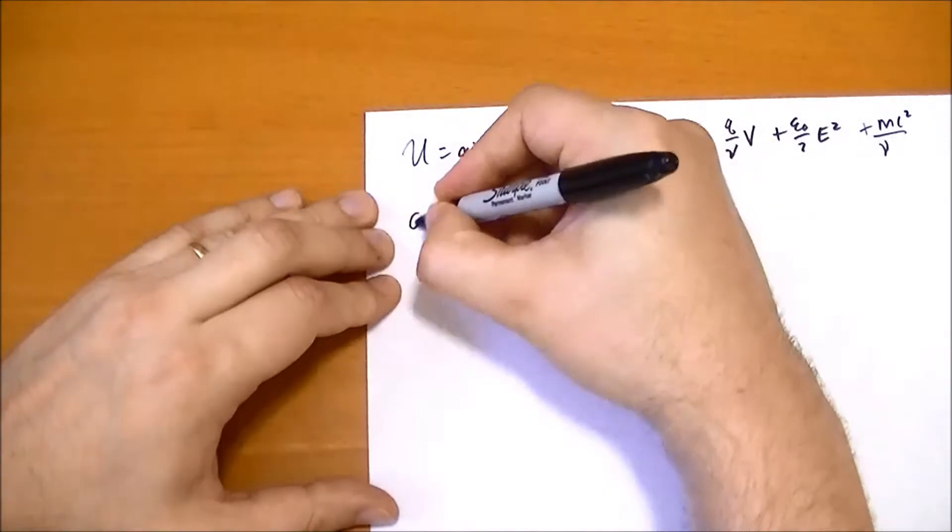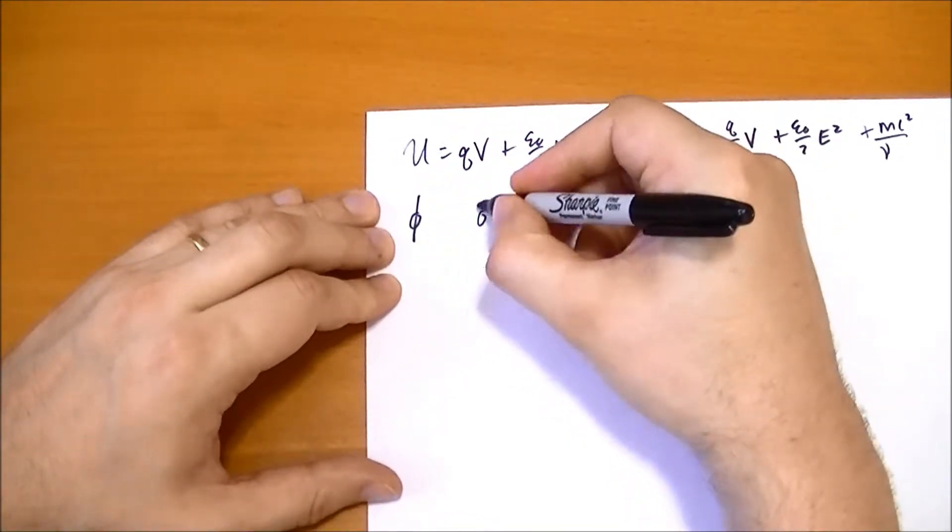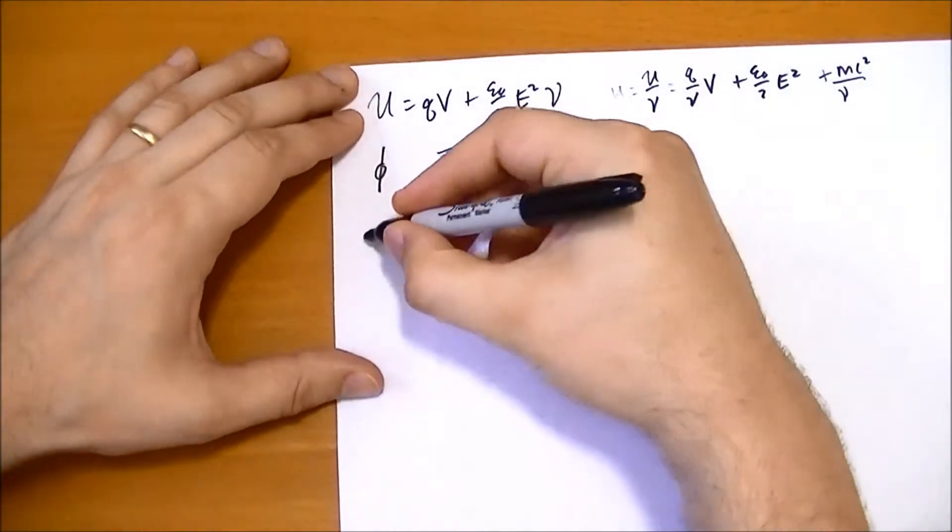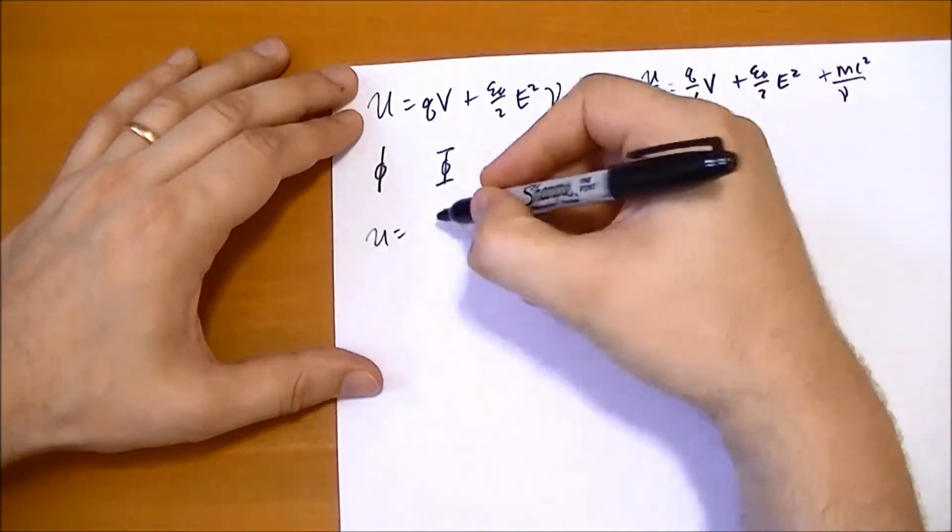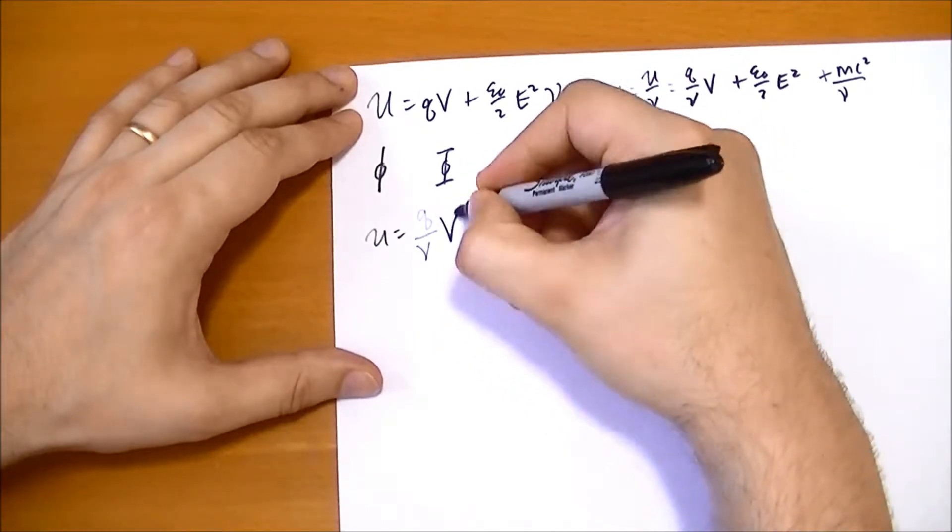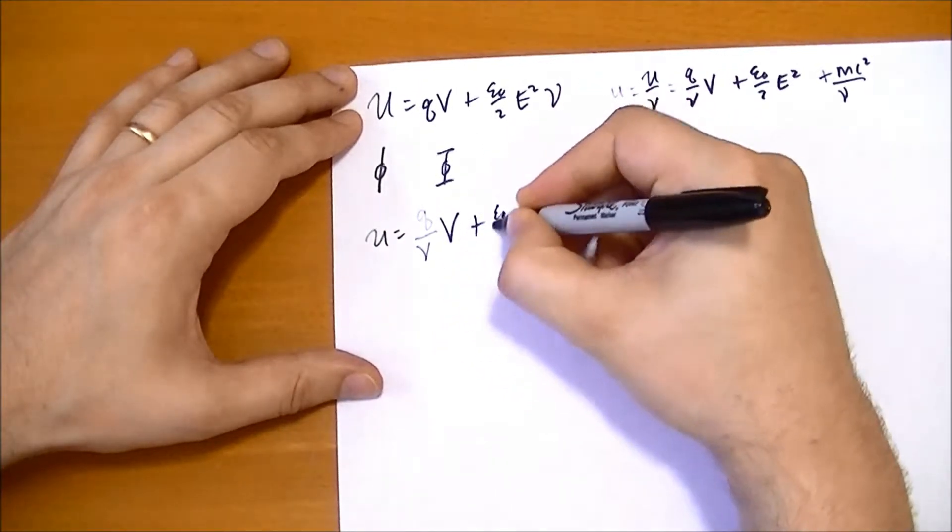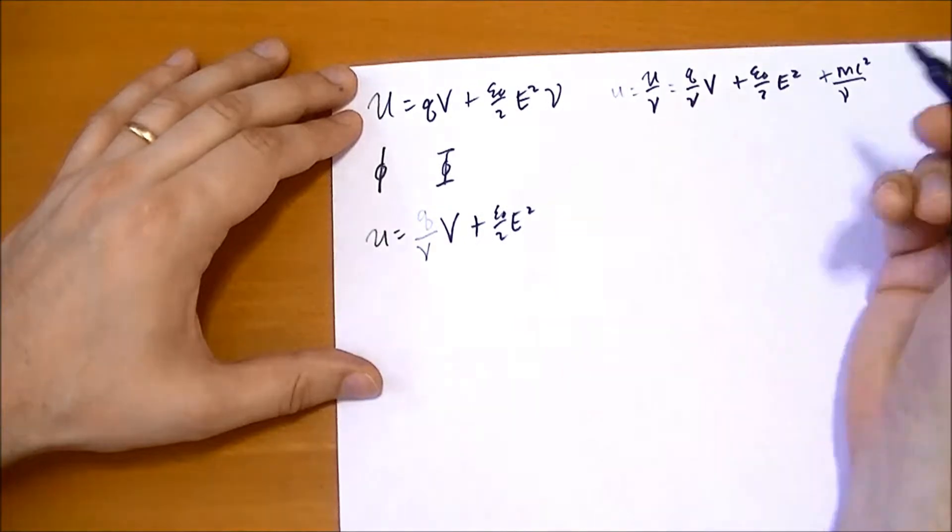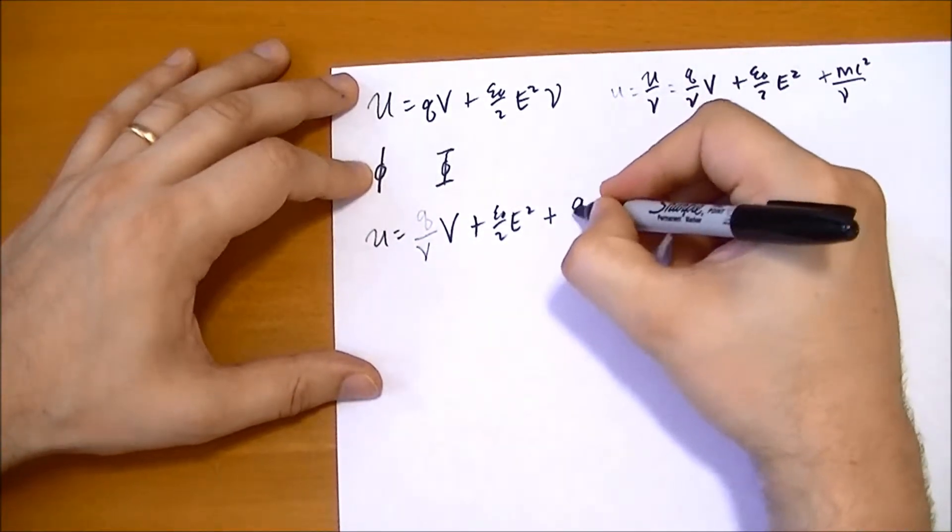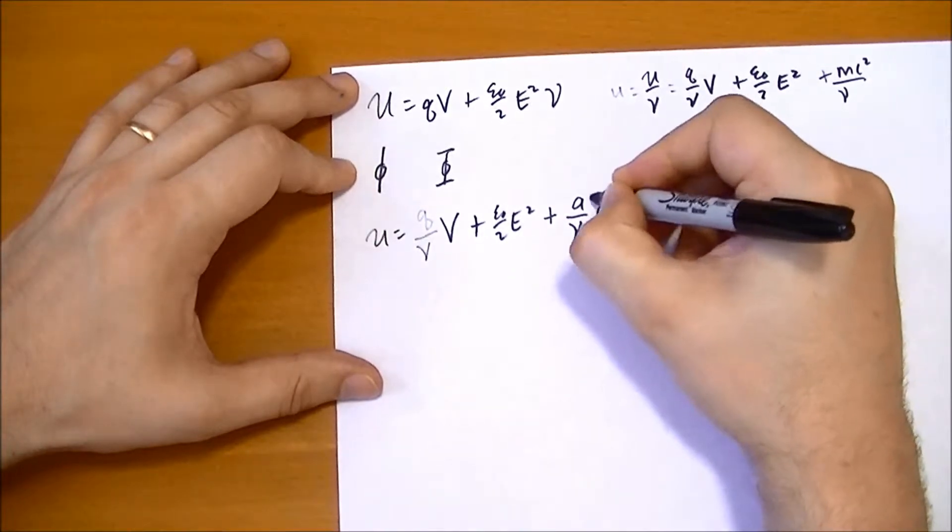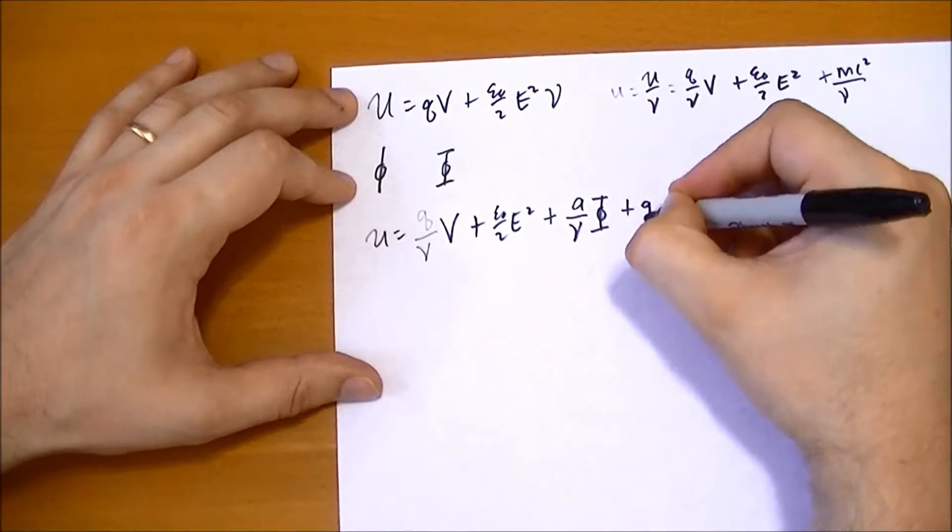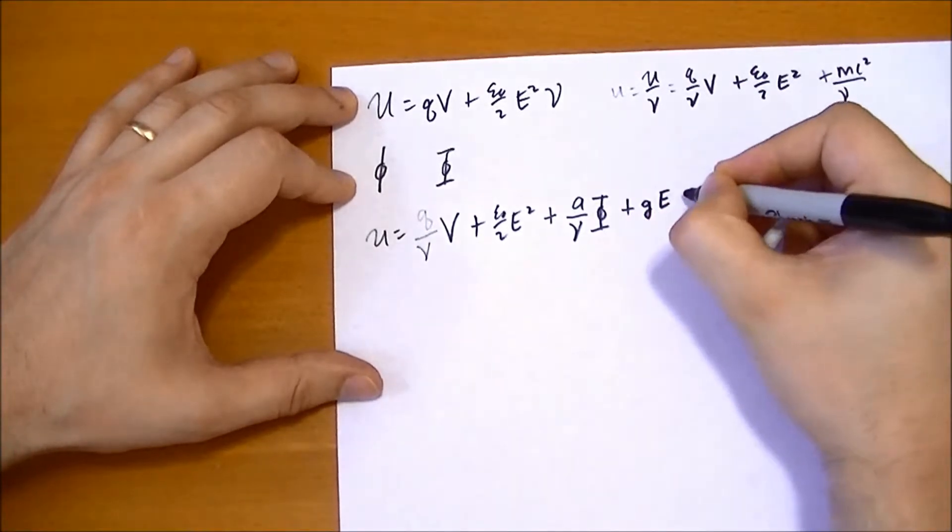The new field we're going to use, we'll use the symbol phi. It has potential capital phi. So we'd write it out: u equals the charge per unit volume times the potential plus epsilon naught over 2 electric field squared plus, so the phi is going to have some source particle that's going to interact with it, the potential, and it's going to interact with the electric field. We'll use a constant g here.